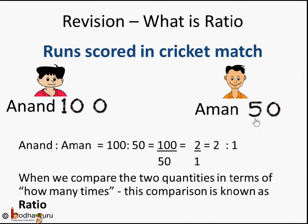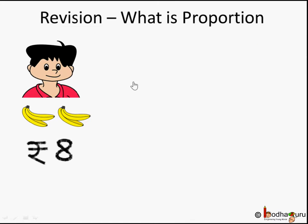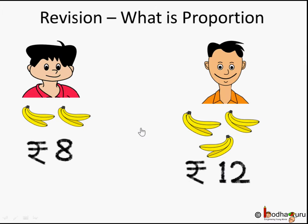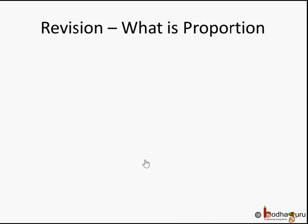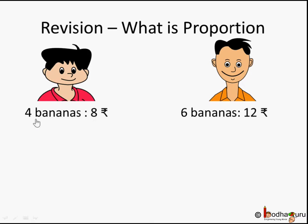So when we compare two quantities in terms of how many times, this comparison is known as ratio — like Anand scored twice the runs as Aman. And what is proportion? Let's say Anand bought 4 bananas for 8 rupees and Aman bought 6 bananas for 12 rupees. They both bought different quantities of banana. Using proportion: 4 bananas to 8 rupees, and 6 bananas to 12 rupees.